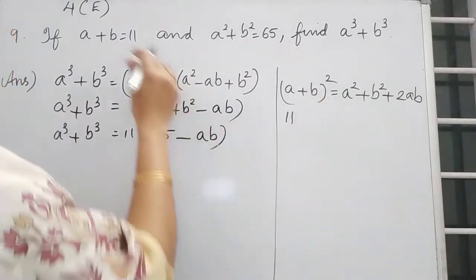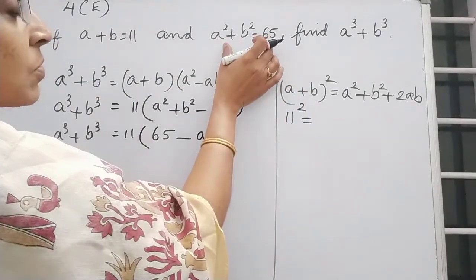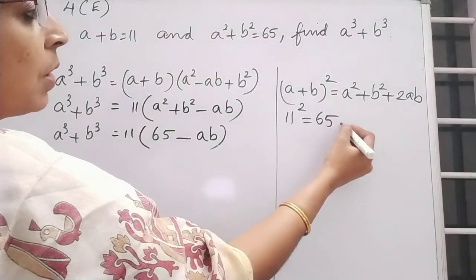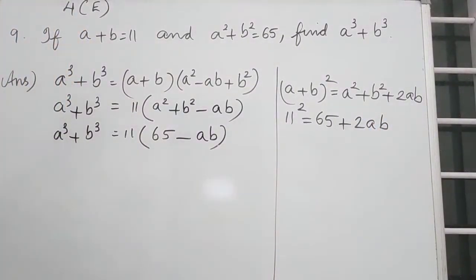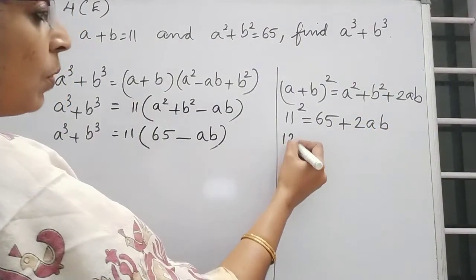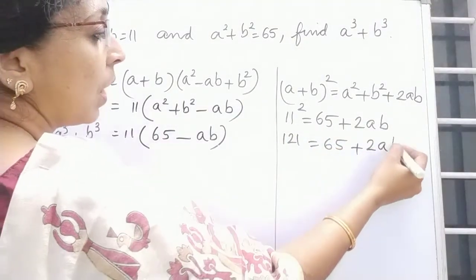So instead of A plus B we can replace it as 11. So 11 square is equal to A square plus B square is given as 65 plus 2AB. 11 square is 121 is equal to 65 plus 2AB.